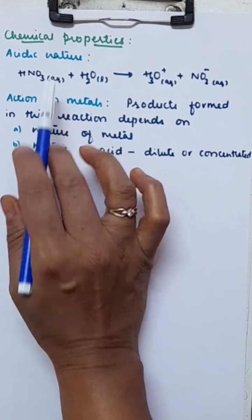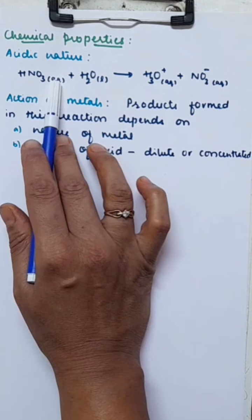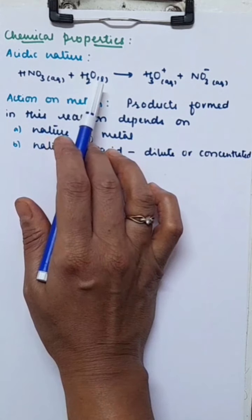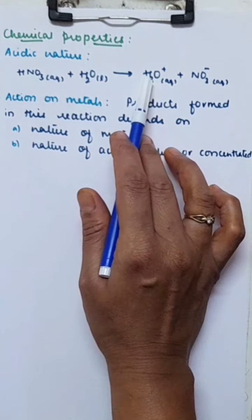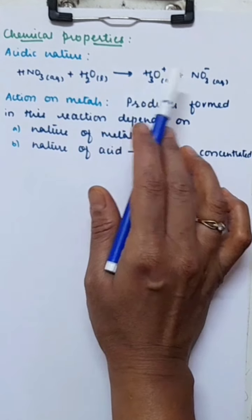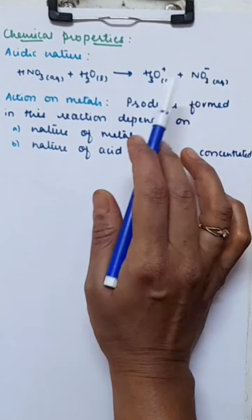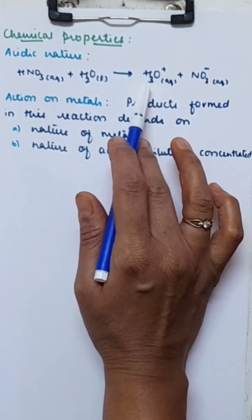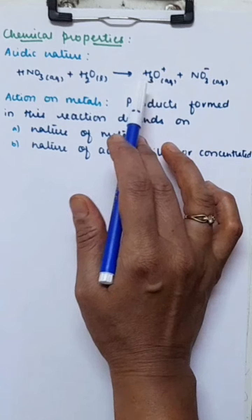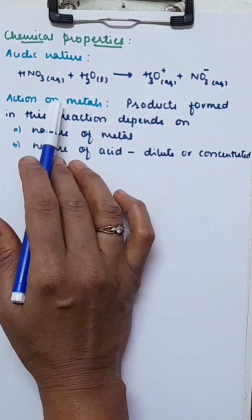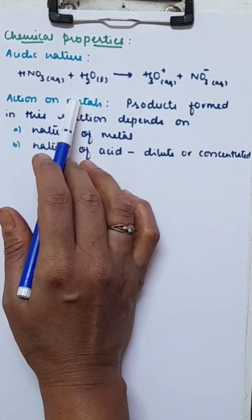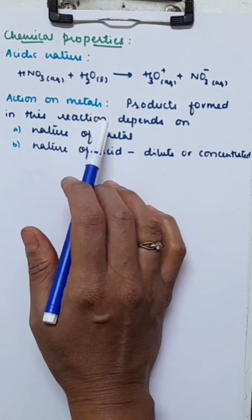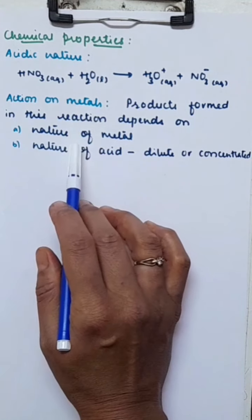Now, the chemical properties of nitric acid. The first one is acidic nature. In aqueous solution, nitric acid behaves as a strong acid, giving hydronium ions (H3O⁺) and nitrate ions. The second property is its action on metals, and the products formed depend on the nature of the metal and whether the nitric acid is dilute or concentrated.